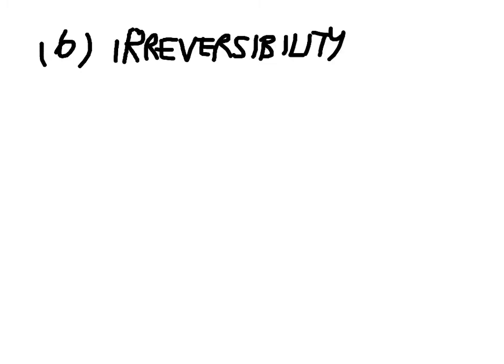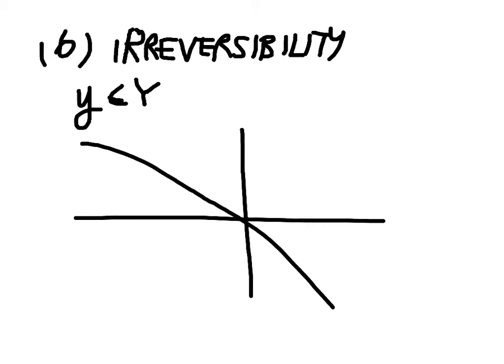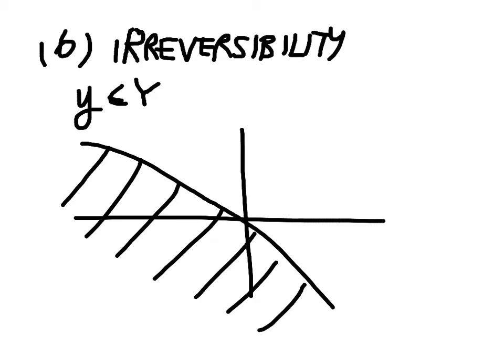The sixth property is irreversibility. Irreversibility means that if I'm producing using a particular technology with production plan y in the production set — for example, let me show you what the production set would look like. Let me pick y on the production frontier. Y requires four units of input to produce three units of output.